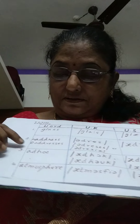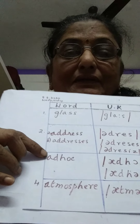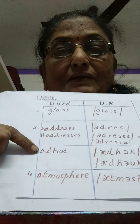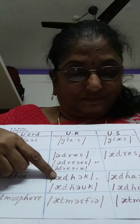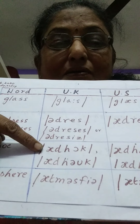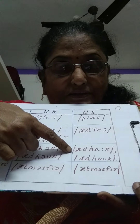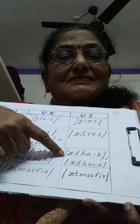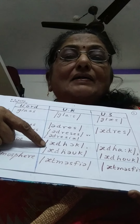The next word is 'ad hoc.' We have the tendency to pronounce it as 'ad hoc,' but it is not 'ad hoc' — it is 'ad hoc.' The British pronunciation is 'ad hoc,' and the American pronunciation is 'ad hoc,' with a harder vowel sound.